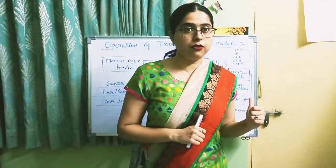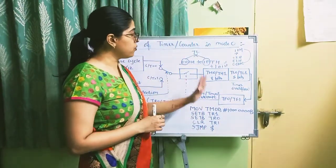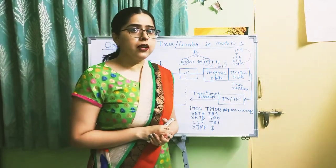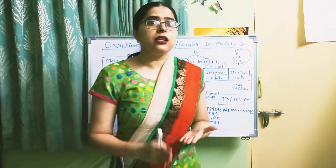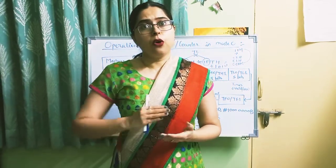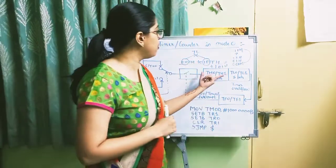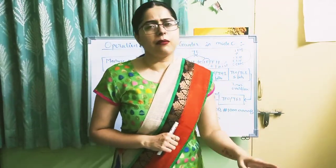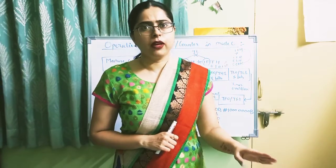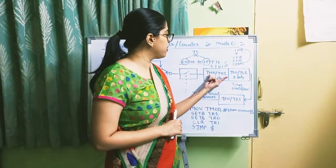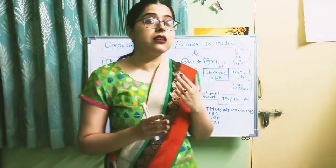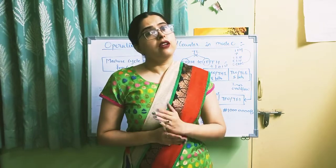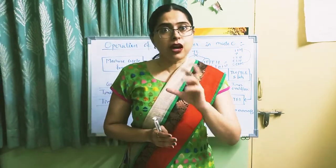Mode 1 operation is similar to Mode 0 with one key difference: instead of 13 bits, all 16 bits are used. Everything else is the same. The count range for Mode 1 is 0000H to FFFFH - the count range is different, but the rest of the operation is identical.